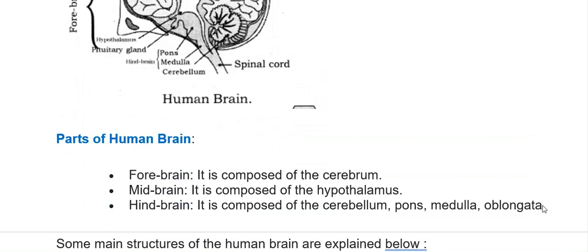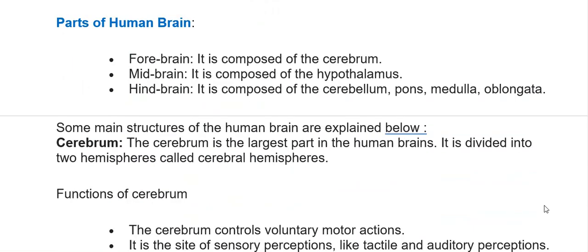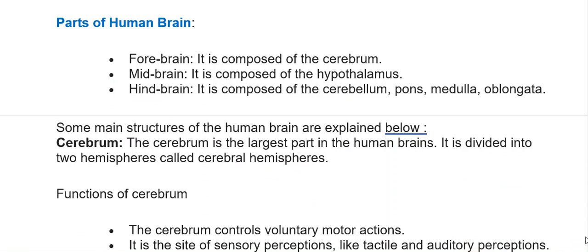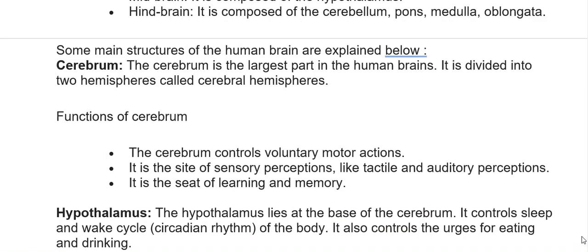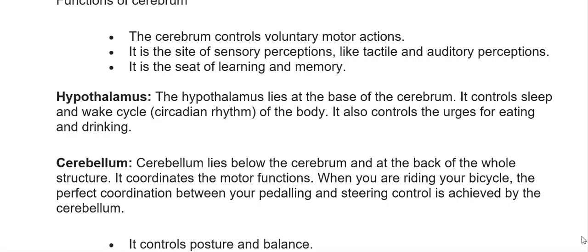The forebrain is composed of the cerebrum. The midbrain is composed of the hypothalamus. The hindbrain is composed of the cerebellum and medulla oblongata. The cerebrum is the largest part of the human brain, divided into two cerebral hemispheres. Functions of the cerebrum include controlling voluntary motor actions, serving as the site of sensory perceptions like tactile and auditory perceptions, and being the seat of learning and memory.